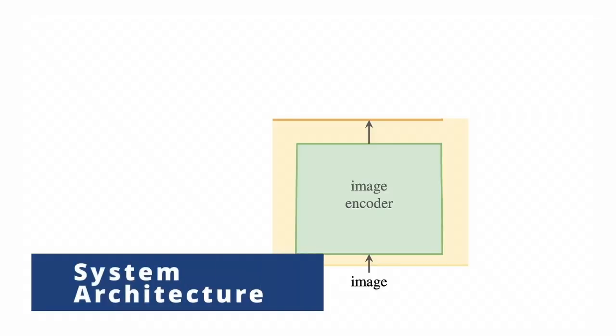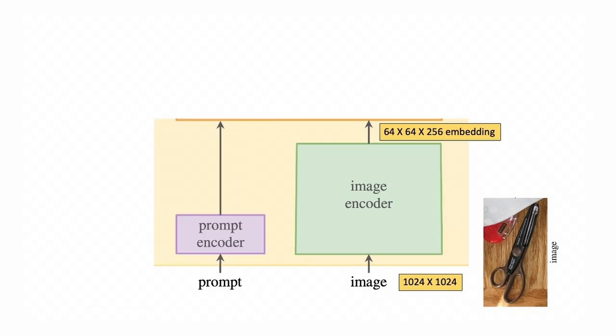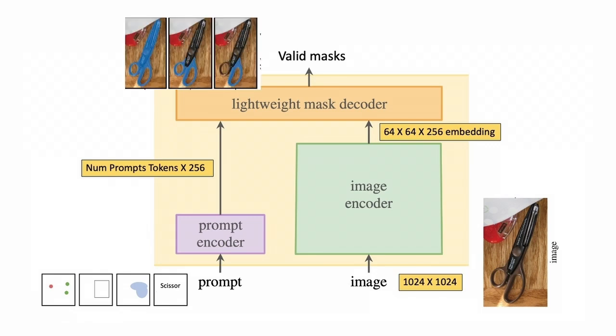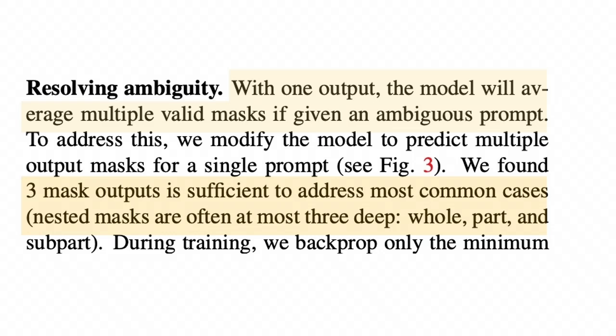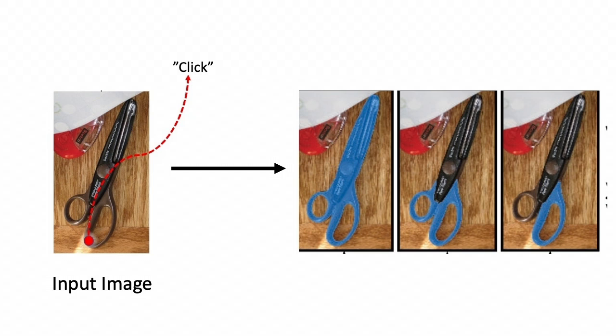First we have an image encoder that inputs an image at 1024x1024 and embeds it into a multi-channel feature map of 64x64 with 256 channels. A prompt encoder then embeds all the prompts which can come in the form of multiple point clicks, bounding boxes and text into a list of vector embeddings. The mask decoder layer then combines the image embeddings and the prompt embeddings and outputs three segmentation masks. These three masks capture segments at three nested levels of depth: the whole, the part or the subpart. Allowing to output multiple masks basically lets the model output valid segments even when the input prompt is ambiguous. Like in case of the scissor, the three masks the model can return can correspond to the whole scissor, the two handles or just one handle.